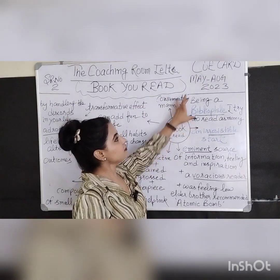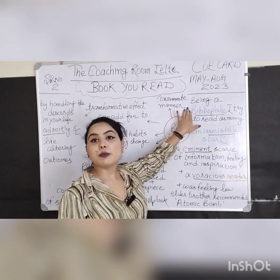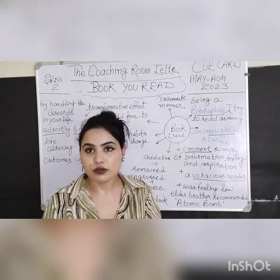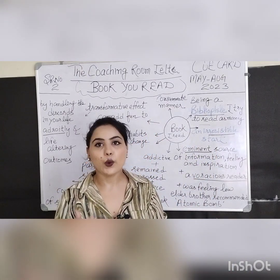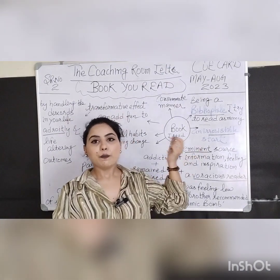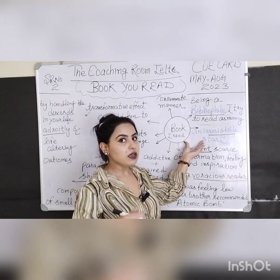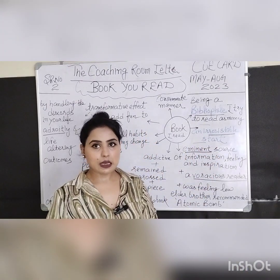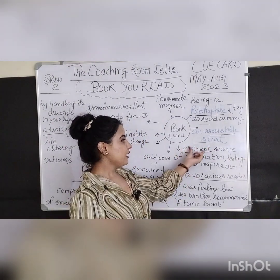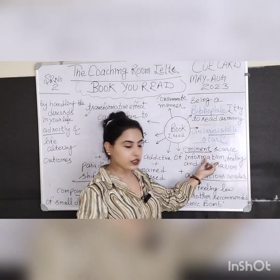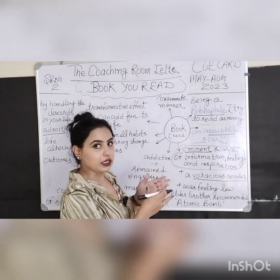The very first line should be impressive. You can frame a sentence by saying 'being a bibliophile.' A bibliophile is a person who really likes to read books. So you can say, 'Being a bibliophile, I try to read as many books as I can in a week. Here I am going to describe a book which is suggested.' Alternatively, for a simpler start, you can say, 'Here I am going to discuss a book that had an irresistible start, as it is an eminent source of information, feeling, and inspiration.'